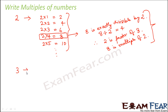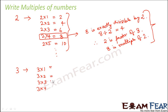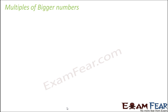Let's write multiples of 3. Multiply 3 by natural numbers: 3×1, 3×2, 3×3, 3×4 and so on, giving 3, 6, 9, 12 and so on. In this way you can write all the multiples of 3.